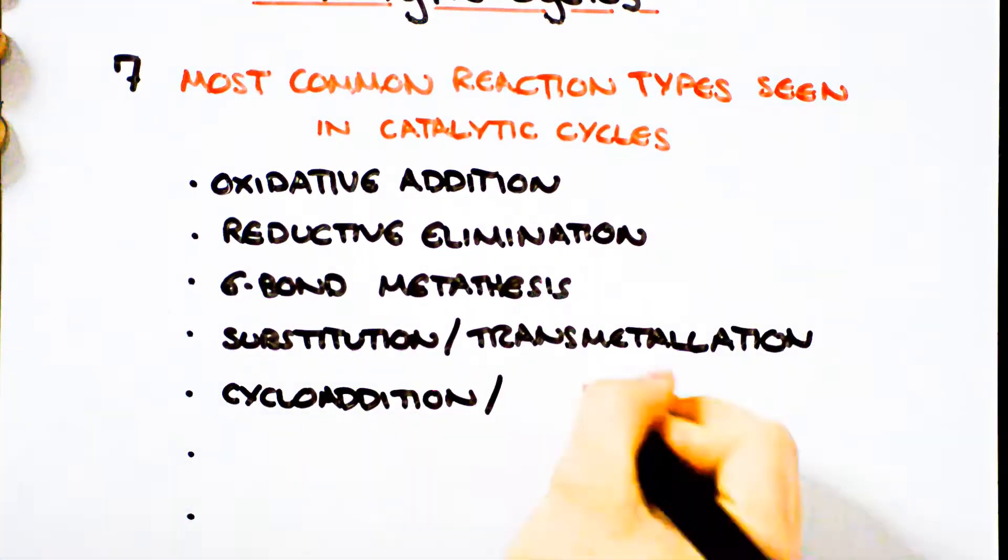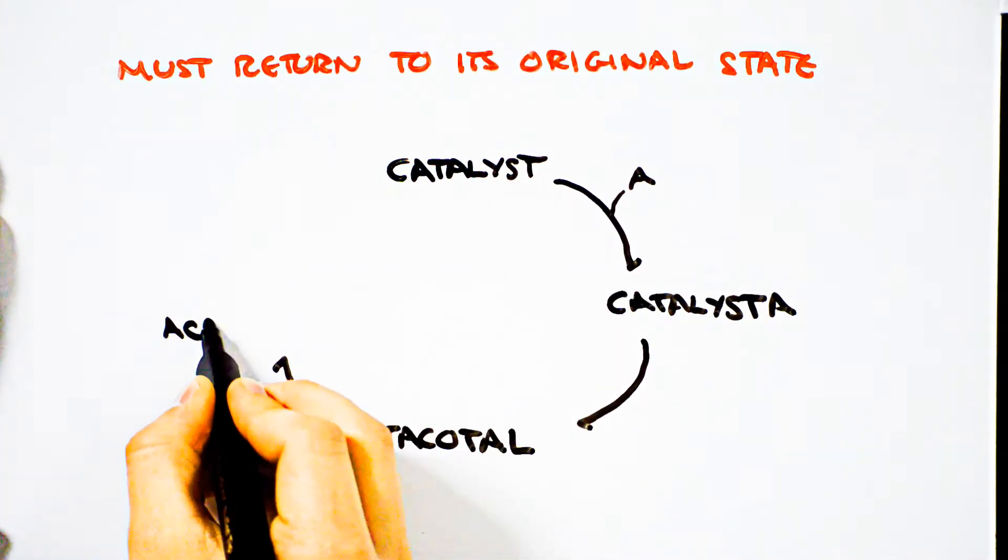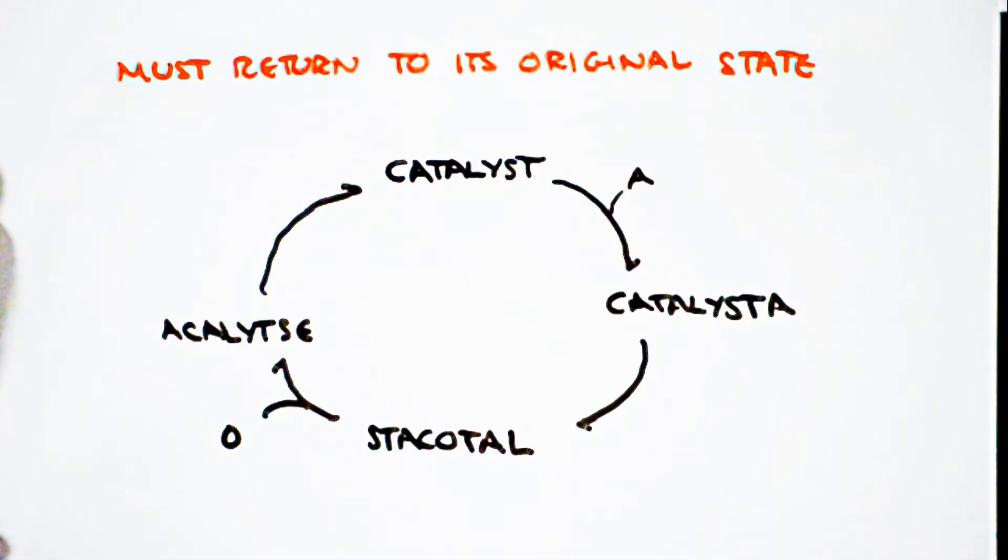Here's a list of reactions that are commonly seen amongst catalysts. A catalytic cycle can involve a number of these reactions, but ultimately must return to its original state.